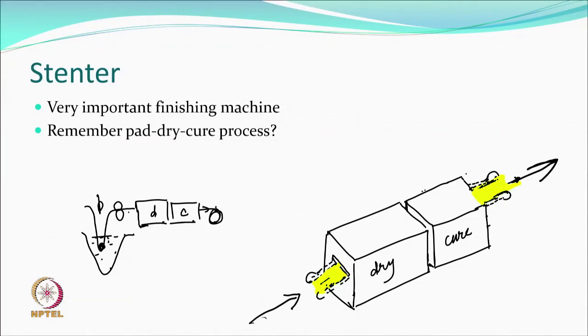One of the most important purposes of the stenter is dimension control. If you want to control the width of the fabric, this is the machine. If you want to control the length, this is the machine. The stenter has chambers where the fabric is picked up by endless chains on both sides, which hold the fabric at or near the selvedges. The chains can pull or relax the fabric depending on the treatment required.